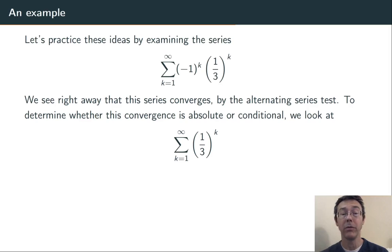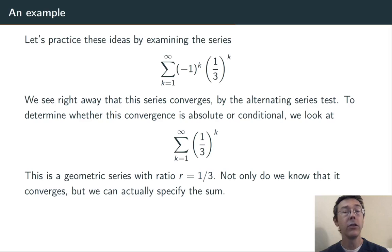Let's look at the series of absolute values. Sum, k equals 1 to infinity, (1/3)^k. This is a geometric series, and the ratio is 1/3. The geometric series converges when r is between negative 1 and 1, so this is going to be convergent.